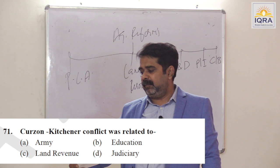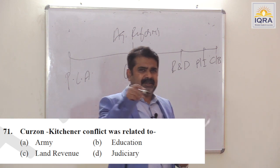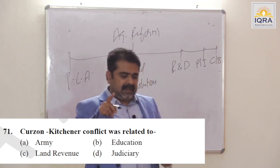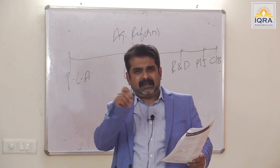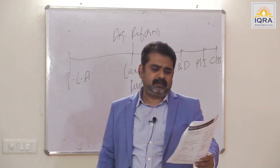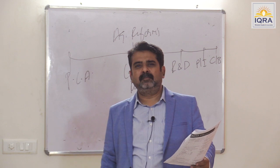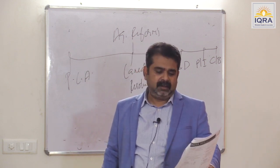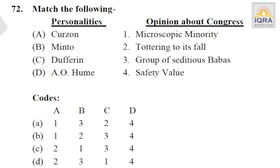Curzon–Kitchener conflict was related to the army. There were two members in the Viceroy's Council — Commander-in-Chief and Military Member. Kitchener, the Commander-in-Chief, wanted the military member post abolished; Curzon was against it. This was called the Curzon–Kitchener conflict. Answer is A. Opinion of personalities regarding Congress: Curzon — 'tottering to its fall'; Minto — 'group of seditious babus'; Dufferin — 'microscopic minority'; A.O. Hume — 'safety wall.' Answer is D.